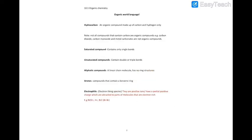Let's see the terms that we'll be using in this chapter. So hydrocarbon, these are things that you should be familiar with since IGCSE. So a hydrocarbon is an organic compound made up of carbon and hydrogen only. Hydrocarbon - hydrogen, carbon.